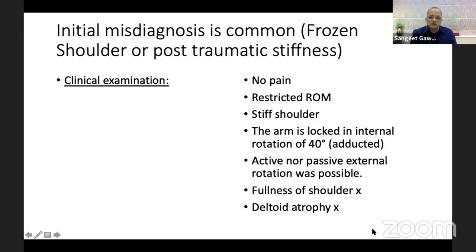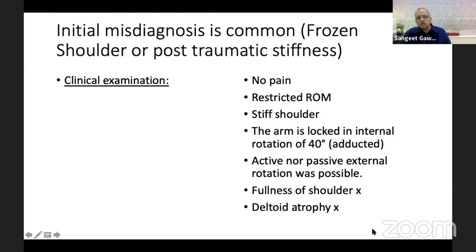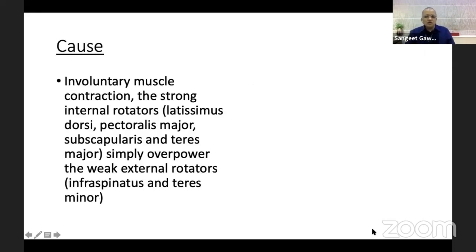The arm was locked in internal rotation of 40 degrees and no further active or passive external rotation was possible from this position. As happens in dislocation, the subacromial space is empty, the normal globular-appearing shoulder is not visible, and at four months there is some deltoid atrophy. These are the clinical examination findings you must look for.